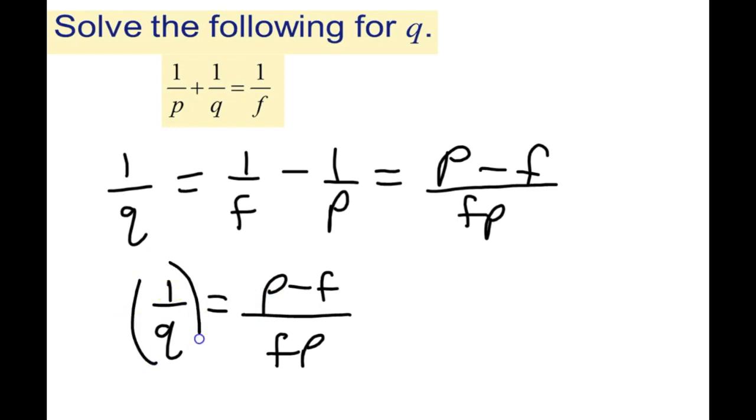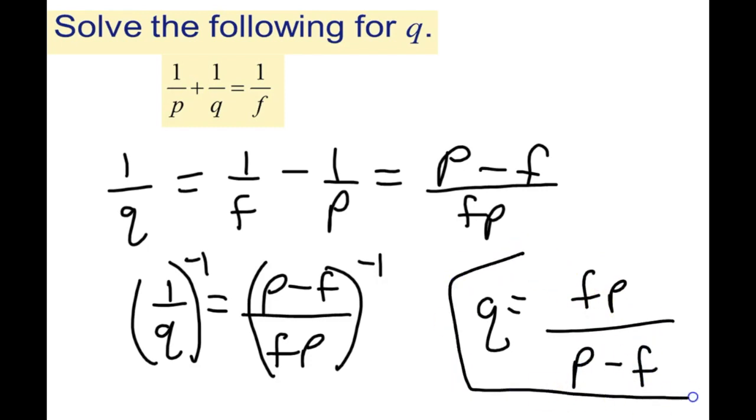So if we take the reciprocal of the left side, we have to take the reciprocal of the right side. So that gives us Q equals FP divided by P minus F. And this is the correct way to solve for Q in this problem.